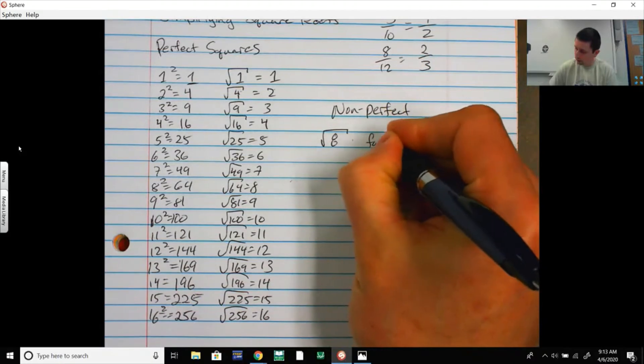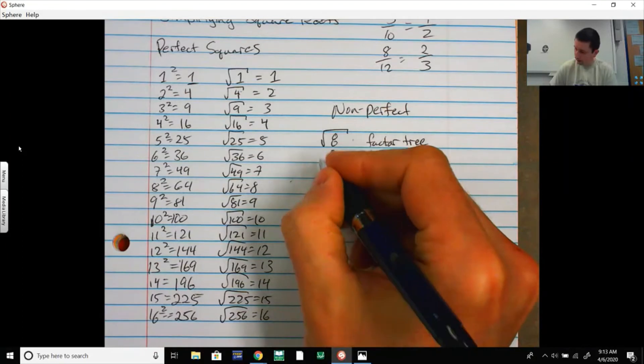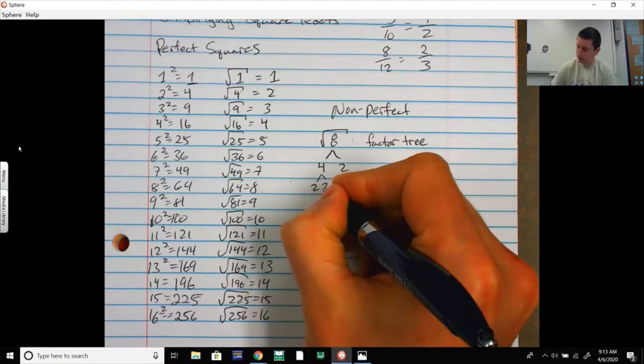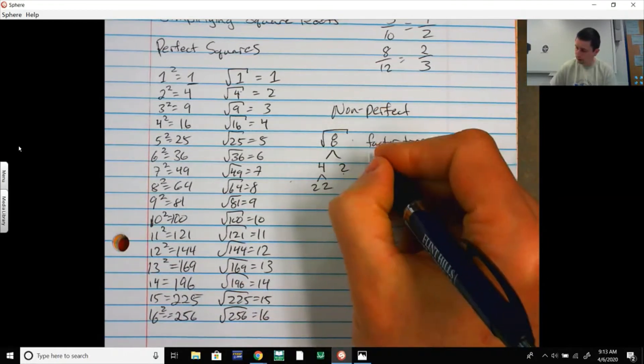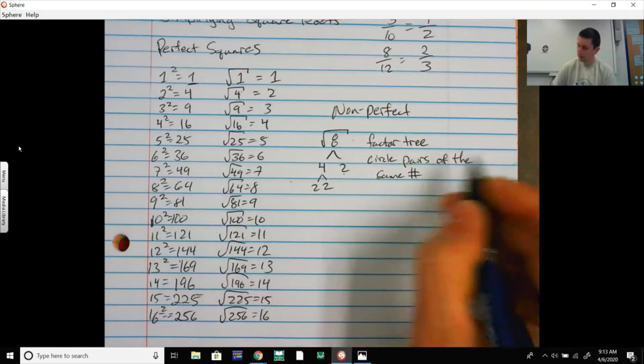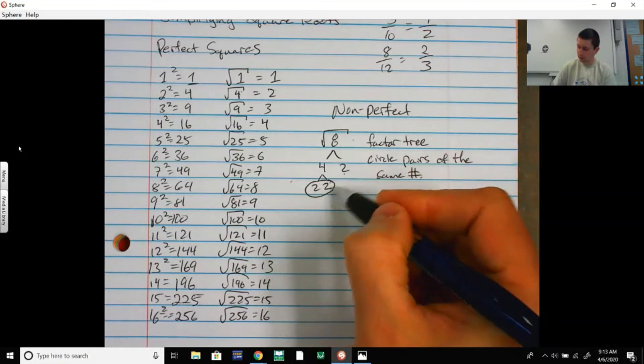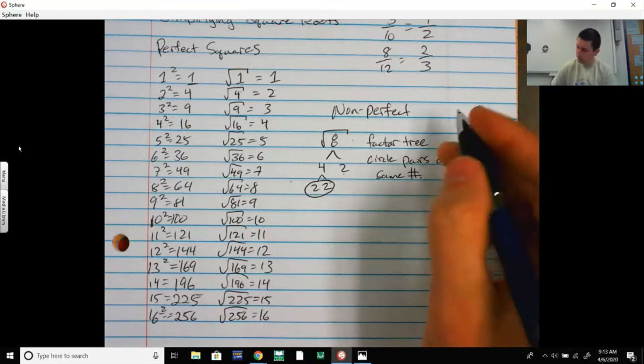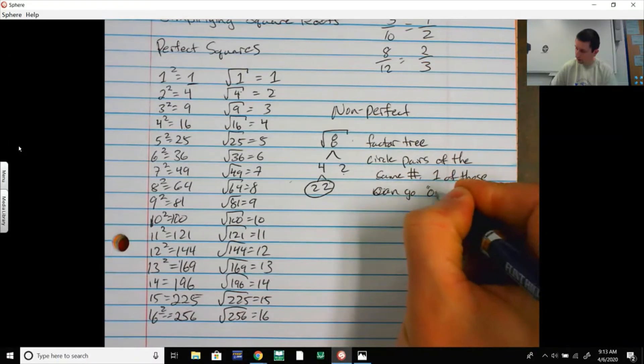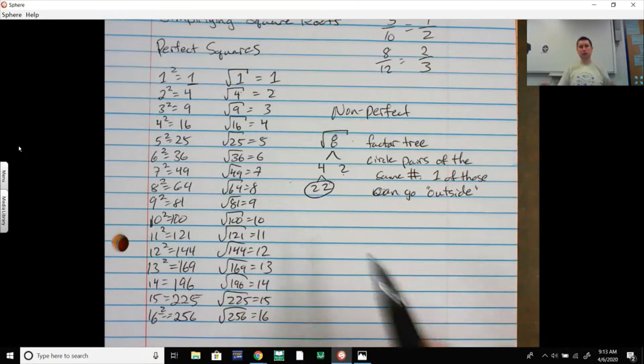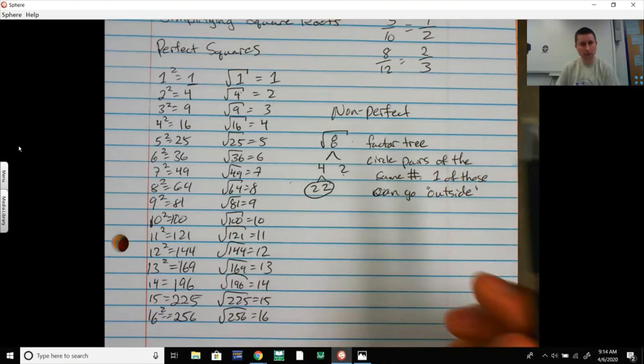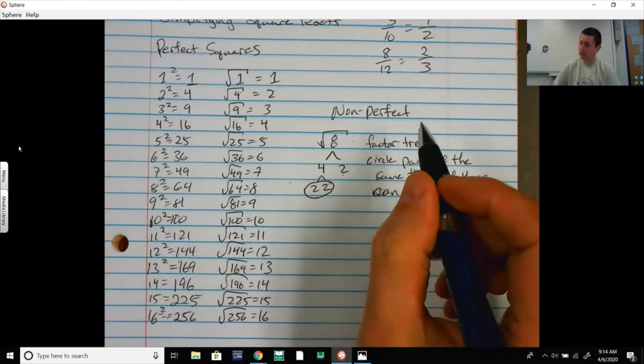So a common example would be the square root of 8. We know the square root of 8 is not a perfect square. The square root of 8 has to be somewhere between 2 and 3 because it's between 4 and 9. 8 is between 4 and 9. So the square root has to be between 2 and 3, very close to 3. So 2.8, 2.9, something like that if we're rounding it, but we're not. We want to do a factor tree. So the square root of 8 is the same as 4 times 2, square root of 4 times square root of 2. The 2 is prime. The 4 can be broken into 2 and 2. So we're going to do a factor tree.